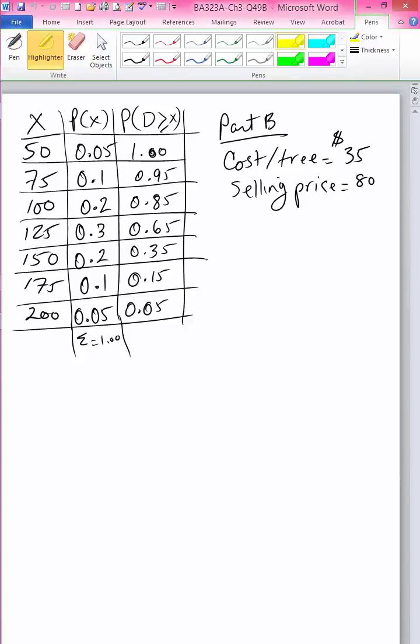We will continue with the Christmas tree problem and marginal analysis for a discrete demand distribution. Part B is working with the same probability distribution where we have these values to be the possible demand for the Christmas trees. We are given the probabilities that are listed here.